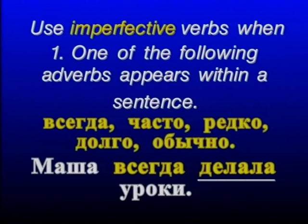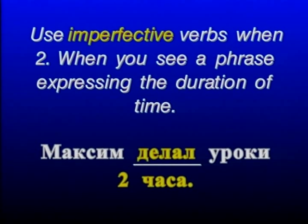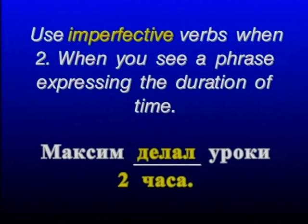And this adverb tells us that we are dealing with a repeated action, a habitual action. Masha всегда делала уроки. We know that imperfective verbs express habitual actions. Our next rule for imperfective verbs: use imperfective verbs when you see a phrase expressing the duration of time. If a certain action lasted for a certain amount of time, it is a progressive action and we need an imperfective verb. Максим делал уроки два часа.